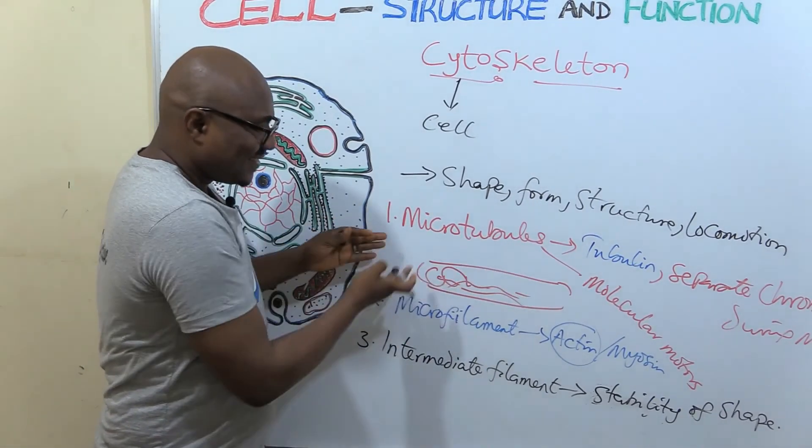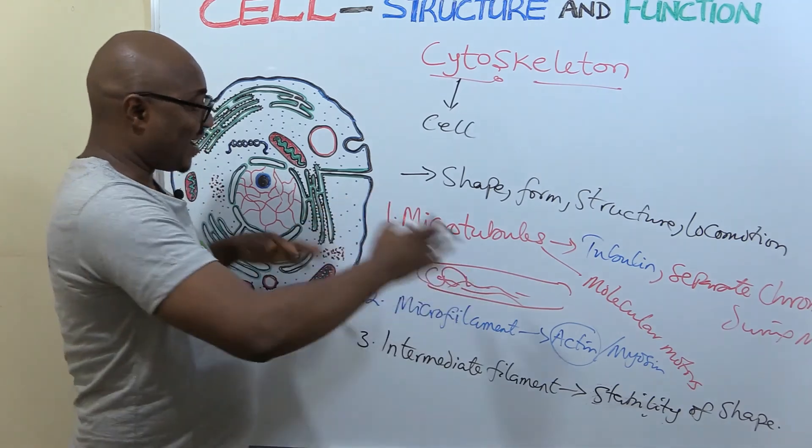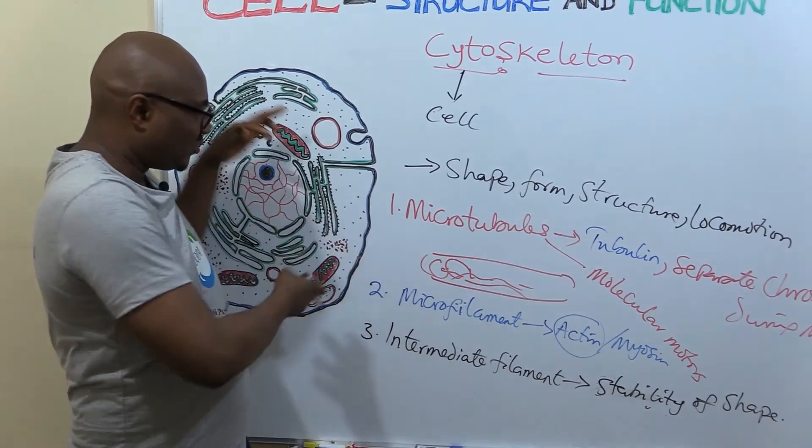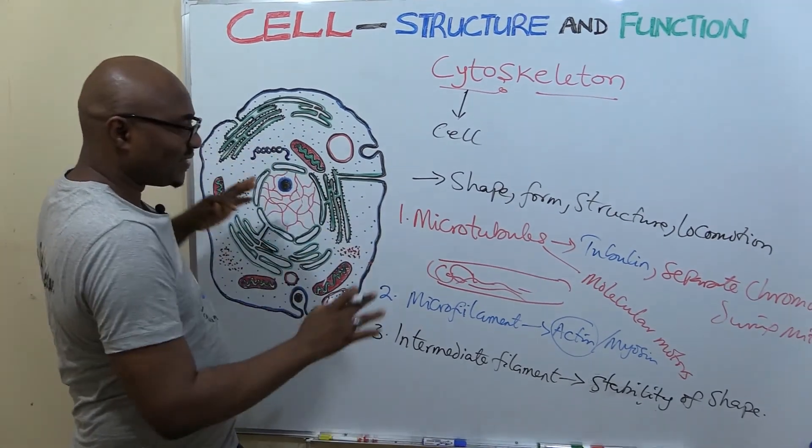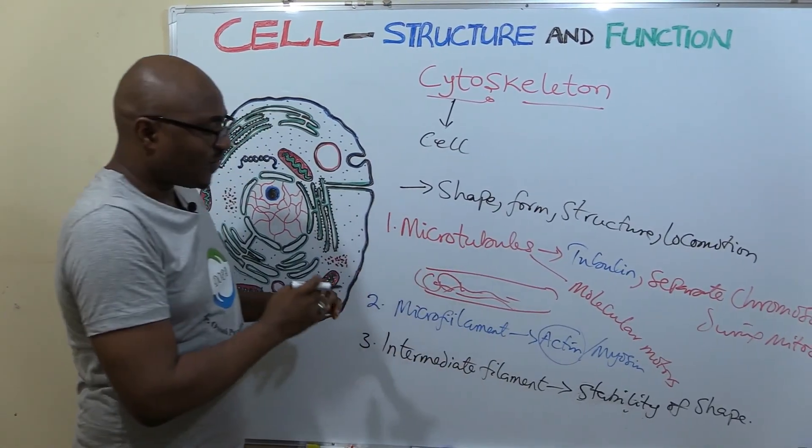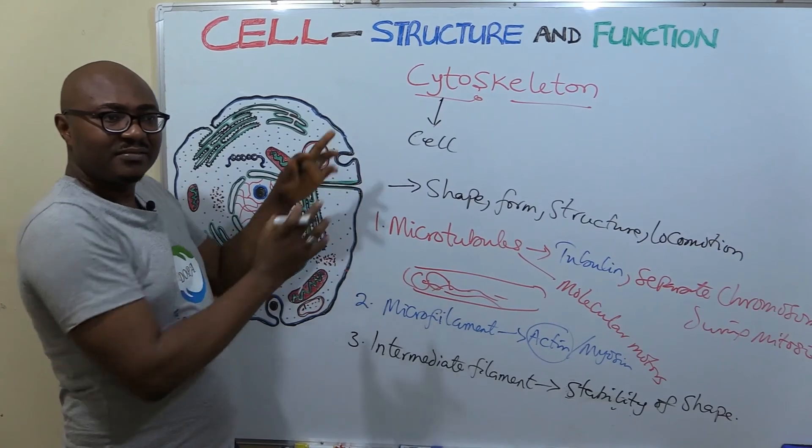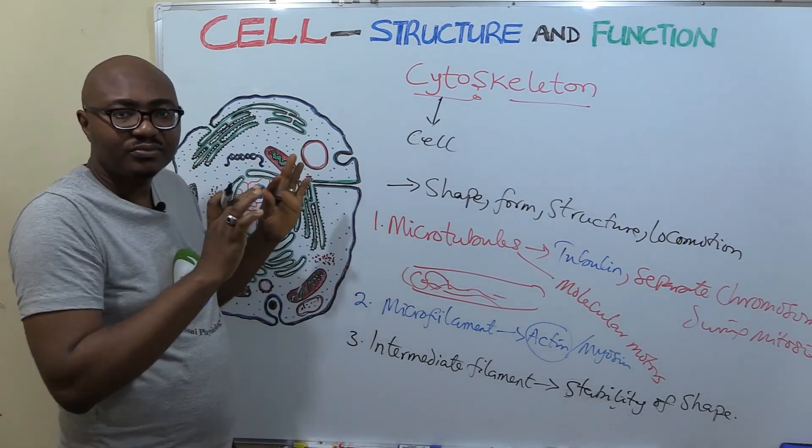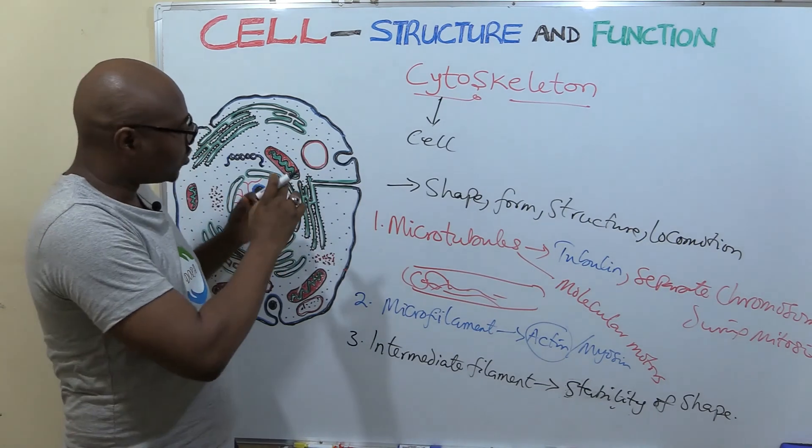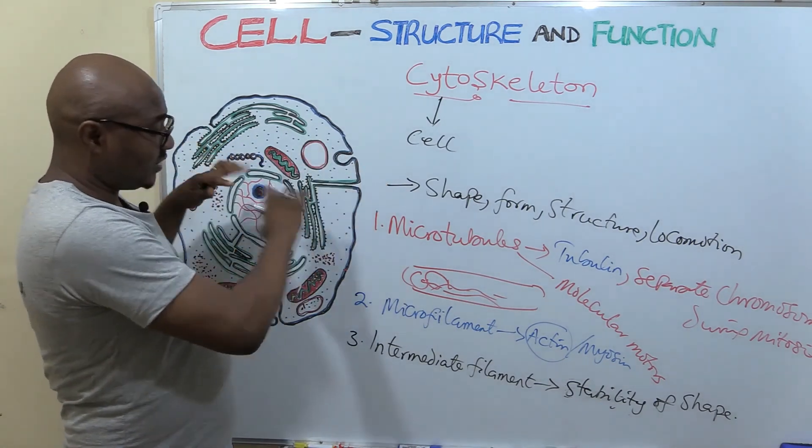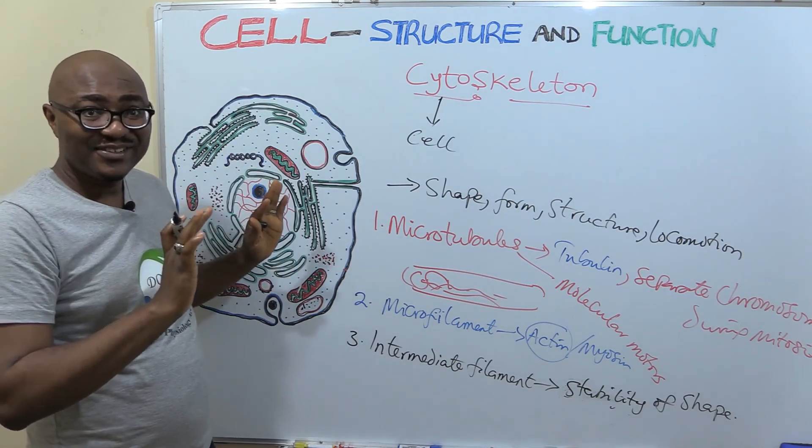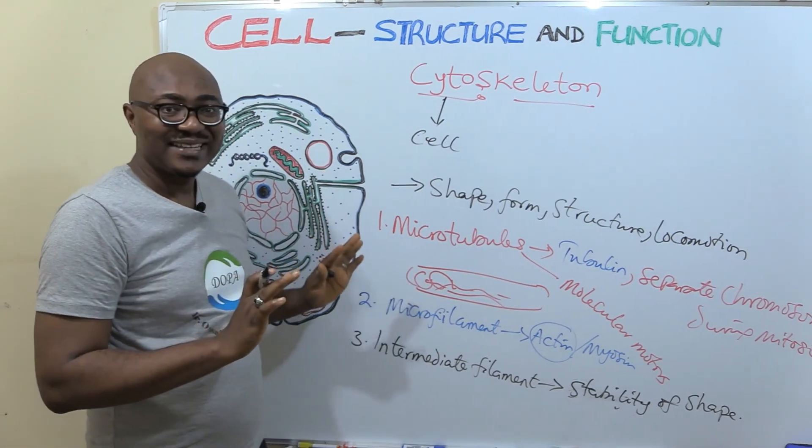This one has to, a railway track, it provides the pathway for movement within the cell so that things can move inside the cell. This one provides that change of shape when the cell needs to move, also contraction of muscles. Then also when the cell wants to divide. While this one is for stability of shape and anchoring of the nucleus. So that's what you need to know about cytoskeleton.